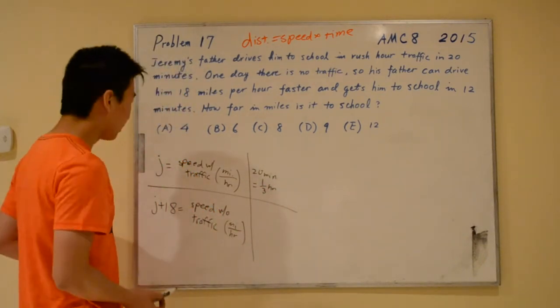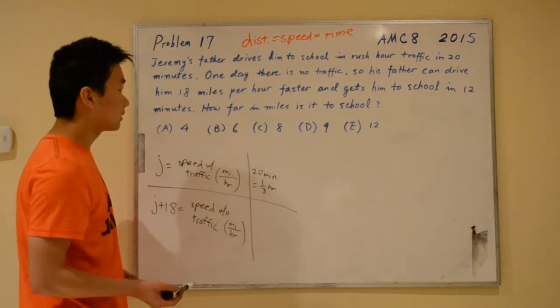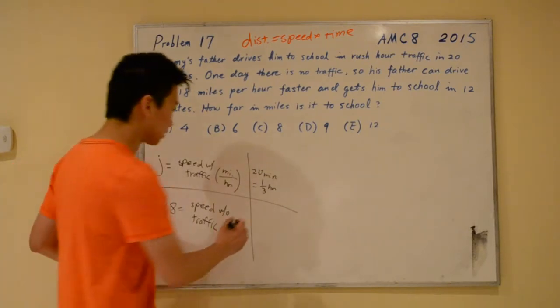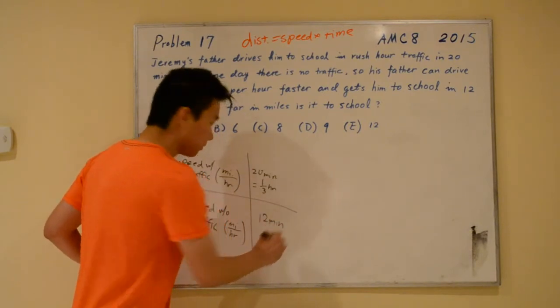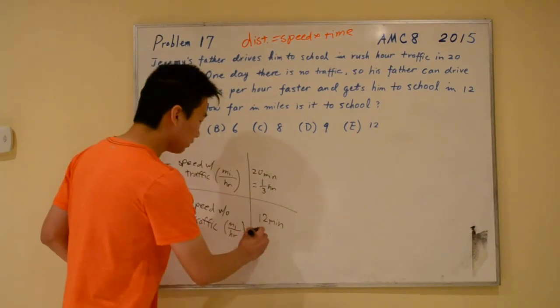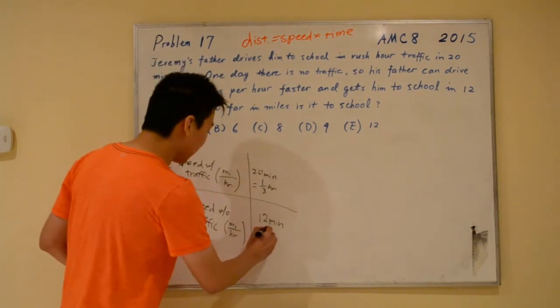Same thing for speed without traffic. It takes them 12 minutes to get to school. We would like to convert this to hours, so this becomes 1 fifth of an hour.